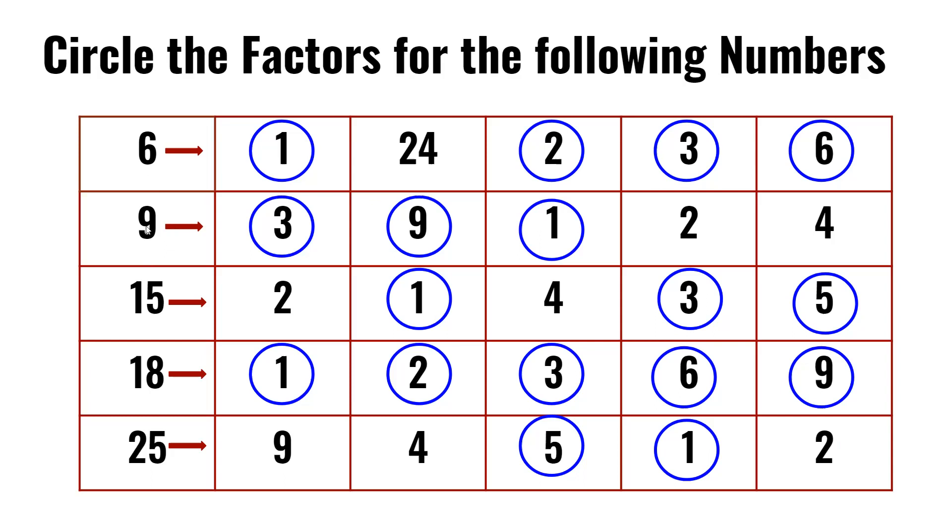On the next row, we have 9. And we have 3, 9, 1, 2, and 4. We know 9 times 1 is 9, and 3 times 3 is also 9. So 3, 9, and 1 are the factors of 9.